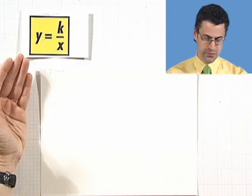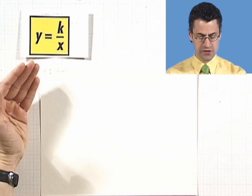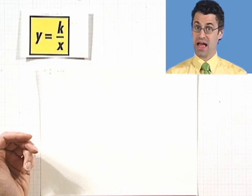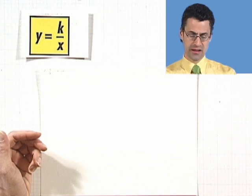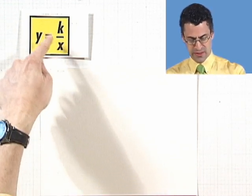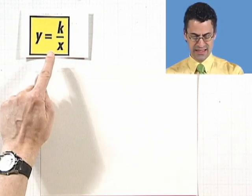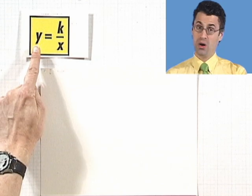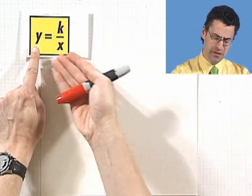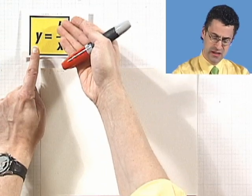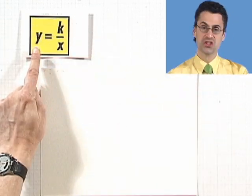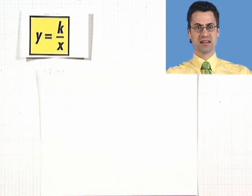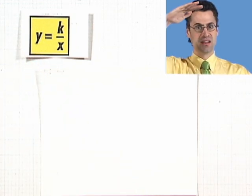In some sense, the opposite of direct variation is inverse variation. That's when we have x and y fitting together to conform to this equation: y equals a constant divided by x. It's called inverse variation because, if the constant is some positive number, as the x's get bigger and bigger, the y's are actually getting smaller and smaller. So as the x's go up, the y's go down — that's why it's called inverse variation.